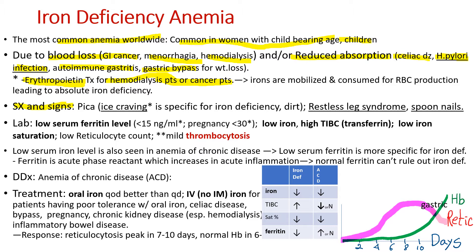I'd like to mention interesting symptoms and signs associated with iron deficiency anemia. The first one is pica — an eating habit of something not nutritional or inedible, such as dirt or clay. Craving for ice is specific for iron deficiency anemia, so don't forget to ask about ice craving. Restless leg syndrome is another commonly occurring symptom. Spoon nails, spoon-shaped nails of the fingers, are other interesting signs. Occasionally, patients develop Plummer-Vinson syndrome, which encompasses swallowing difficulty, sore tongue, and iron deficiency anemia.